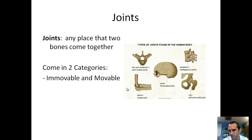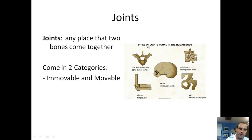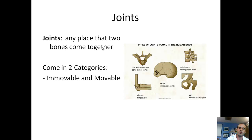Any place where bones are coming together forms a joint. In your picture on the right you've got some types of joints found in the human body. They basically come in two categories: immovable and movable. Immovable joints are like the ones in your skull, and movable joints are anywhere from your elbow to your knee to your spine.